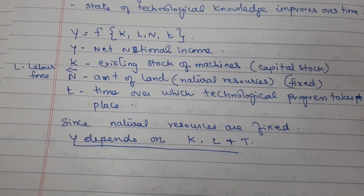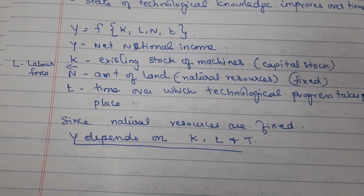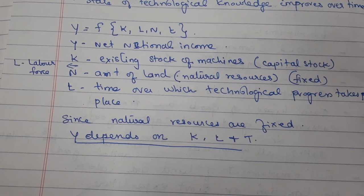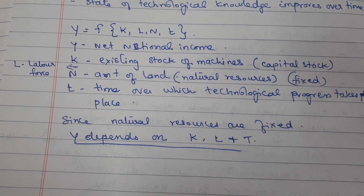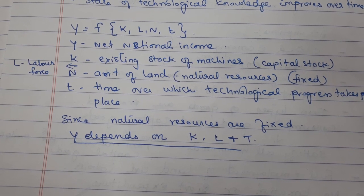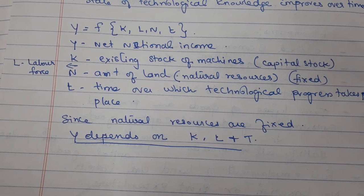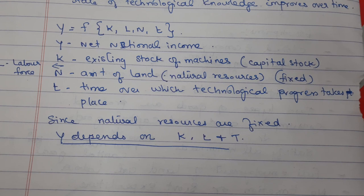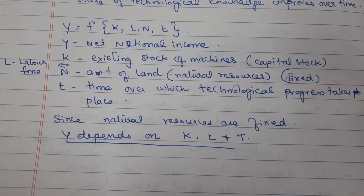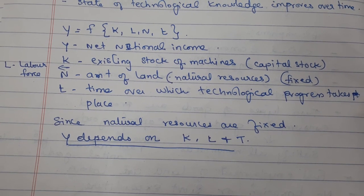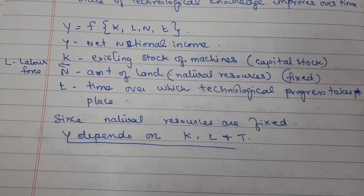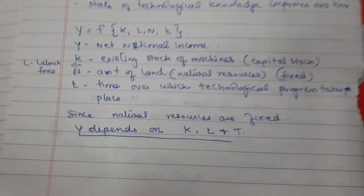Y is a function of K, L, N, and T. Y is net national income; K is existing stock of capital; L is labour force; N is amount of land, that is natural resources, which is fixed in nature; and T is time over which technological progress takes place. Since natural resources are fixed, Y depends on K, L, N, and T.